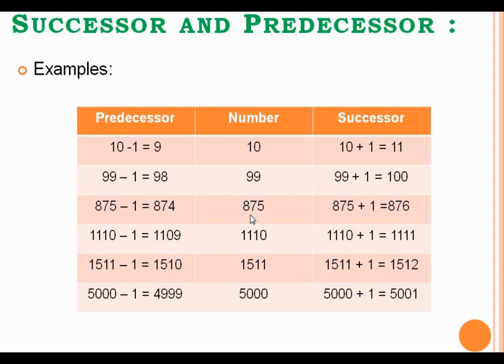Same way, 875 is the given number. For finding the successor of the given number, you have to just add 1 and you will get the successor. And subtract 1 from the given number, you will get the predecessor.